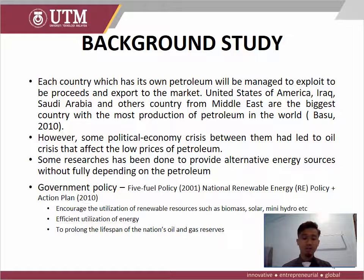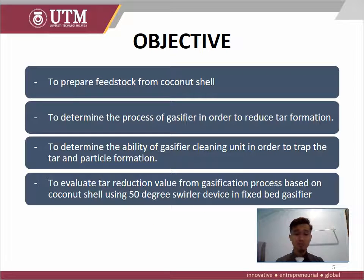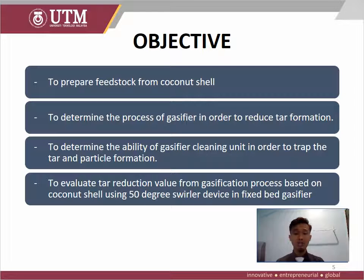There are four main objectives for this undergraduate project. First, to prepare the fixed feedstock from the coconut shell. Second, to determine the process of the gasifier in order to reduce tar formation. Third, to determine the ability of the gasifier cleaning unit to trap the tar and particulate formation. Last, to evaluate the tar reduction value from the gasification process based on coconut shell using a 50-degree device in a fixed bed gasifier.